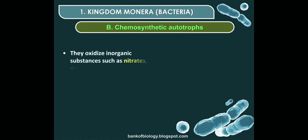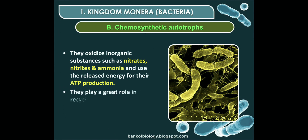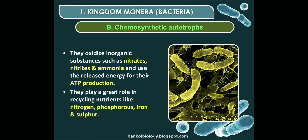The second type is chemosynthetic autotrophs, which use chemicals for making their food. They oxidize inorganic substances such as nitrates, nitrites, and ammonia, and use the released energy for ATP production. Chemosynthetic autotrophs play a great role in recycling nutrients like nitrogen, phosphorus, iron, and sulfur.